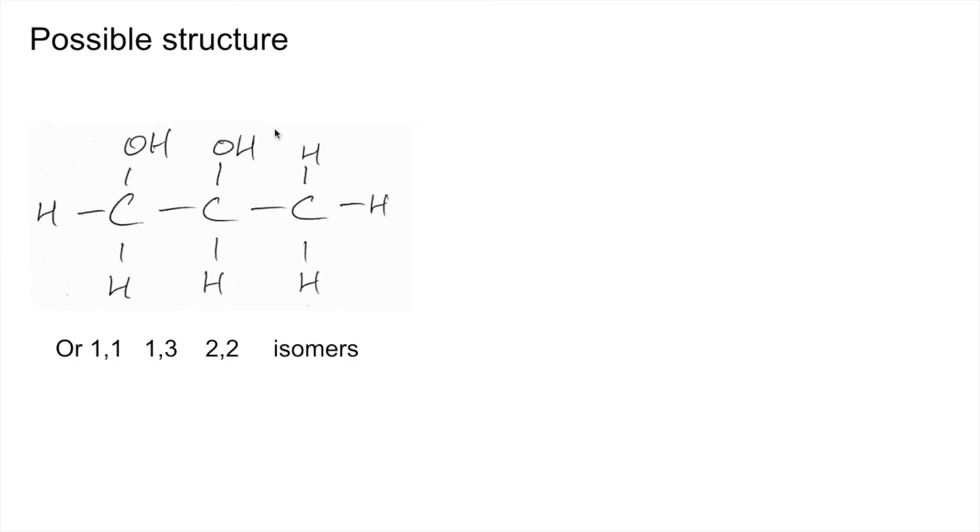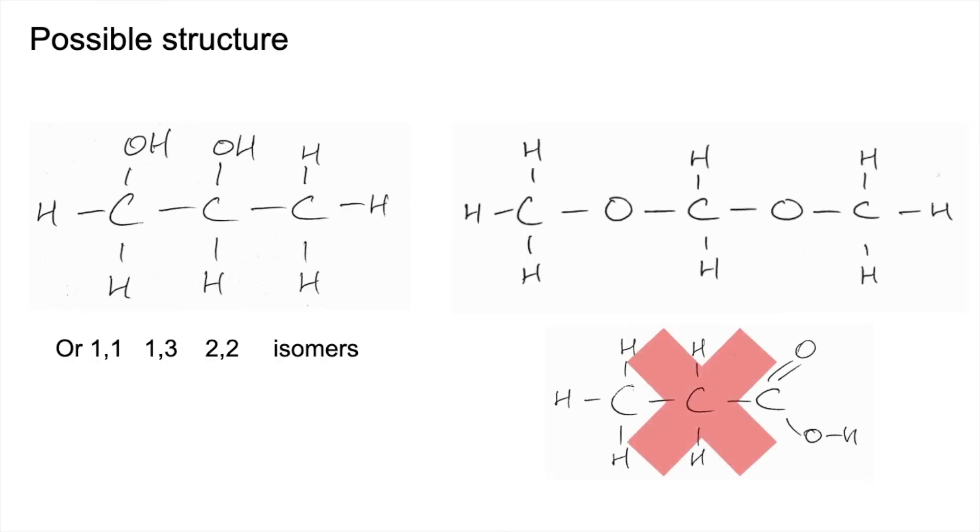And another one you could have gone for, I don't think I would have gone for this one, is something like that. With it having 2 oxygens, you might have thought it was a carboxylic acid, but the only carboxylic acid it could be, with 3 carbons, is that one. And you can see there's not enough hydrogens in propanoic acid, so it can't be that.